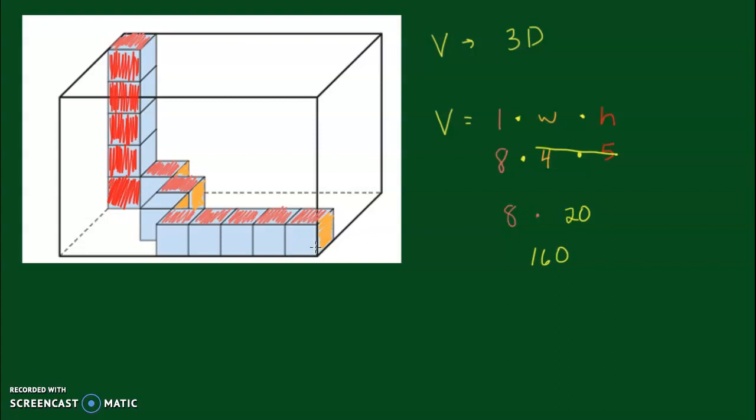Now, we do not know if the size of these cubes are inches, centimeters. So, we're just going to call it units. And, since it's three dimensions, we're going to put an exponent of three here. So, the volume of this prism is 160 units cubed. Or, we could also write cubic units.